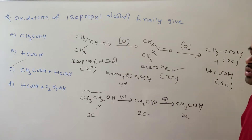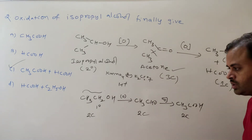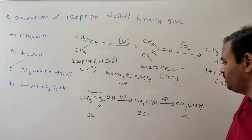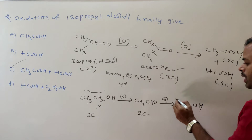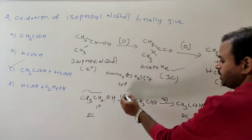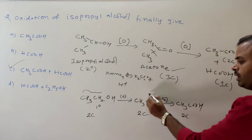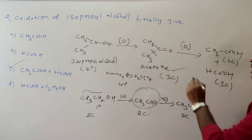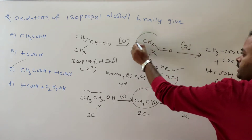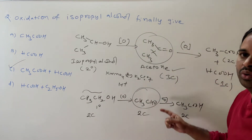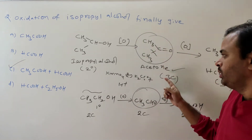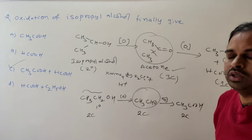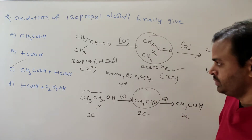So as a summary: primary alcohol gives aldehyde first, and secondary alcohol gives ketone. Later on, both give carboxylic acid.